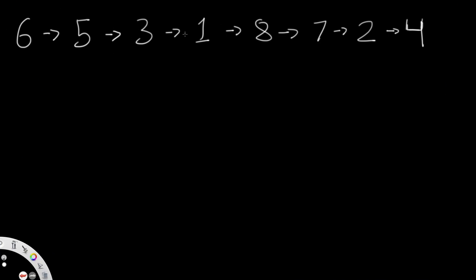We're going to start off with this unsorted array of 6, 5, 3, 1, 8, 7, 2, 4. Pretty obviously it's not sorted, and our goal is to sort it. You can do insertion sort in place, or we could use extra memory. I'll show the second option since I think that's easier to visualize.